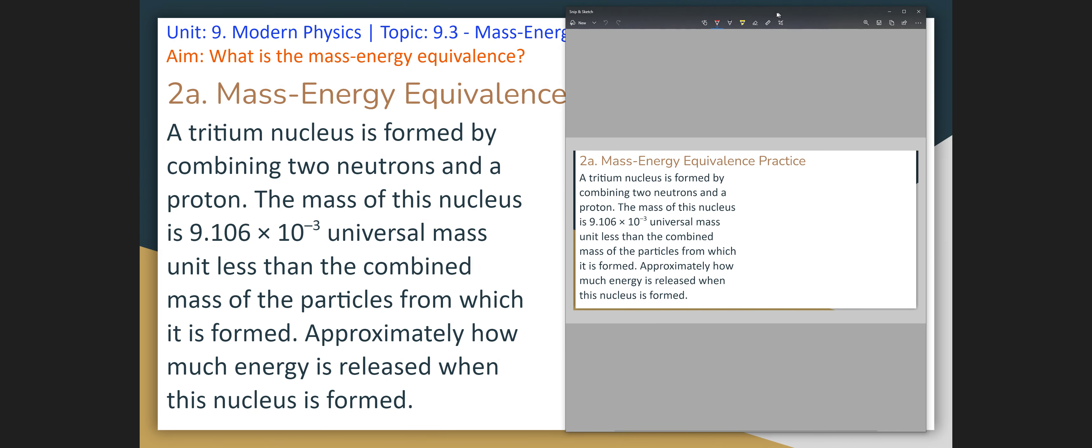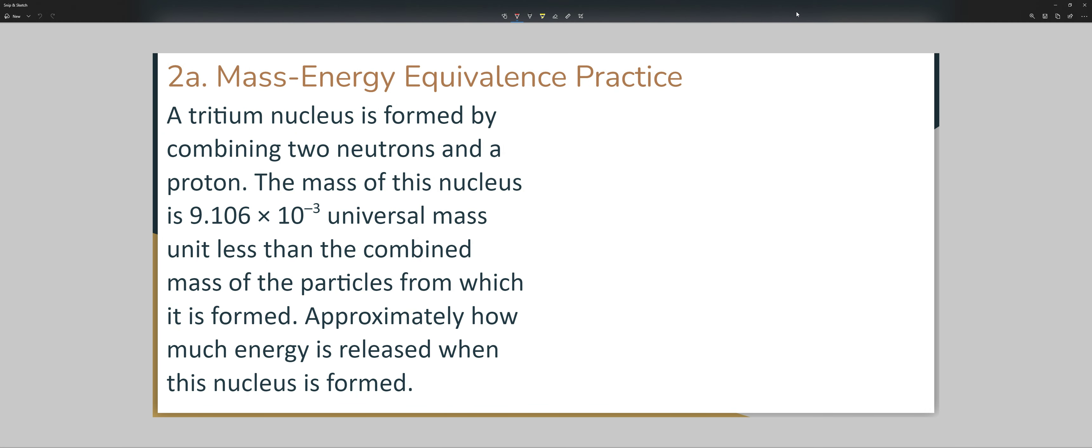So 2a might confuse you. It says a tritium nucleus is formed by combining two neutrons and a proton. The mass of this nucleus is 9.106 times 10 to the negative 3 universal mass units. So this is something new, a new unit. We're going to abbreviate universal mass unit as U.